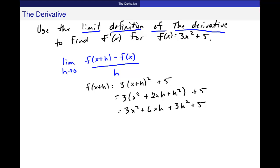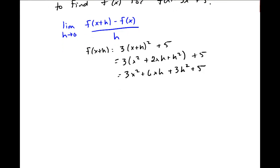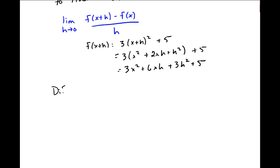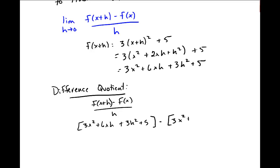And I'll plug this into the limit definition of the derivative. So find the difference quotient. So f of x plus h minus f of x over h. And I get 3x squared plus 6xh plus 3h squared plus 5. And minus the original function, which was 3x squared plus 5. And all divided by h.